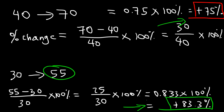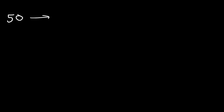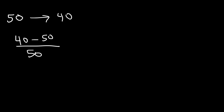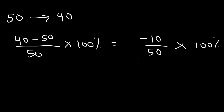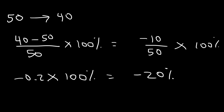The only time you'll have a percent decrease is if the new value is less than the original value. For example, if 50 decreases to 40, this is going to be a percent decrease because the new value is less than the original value. The new value is 40, the original value is 50, divided by the original value, times 100%. So 40 minus 50 is negative 10. Negative 10 divided by 50 is negative 0.2. Multiply by 100% and you get negative 20%, which represents a percent decrease.